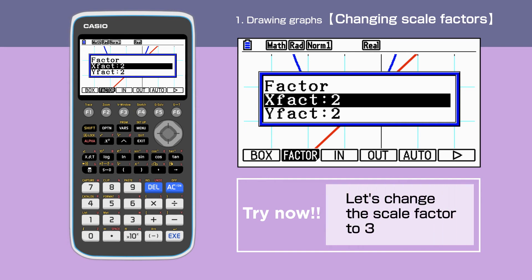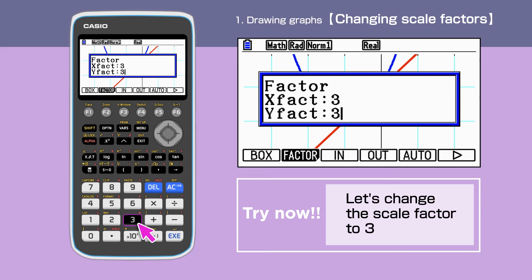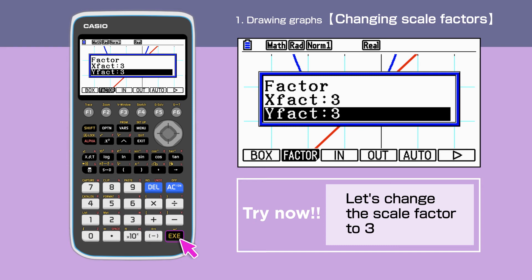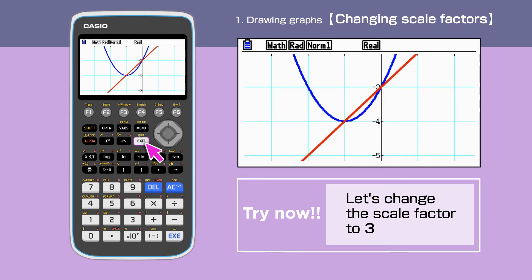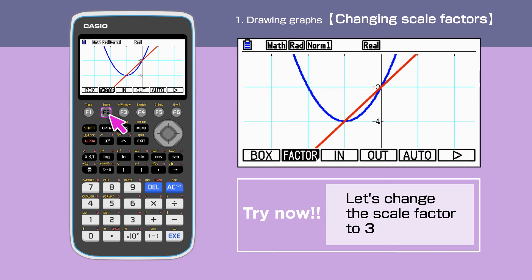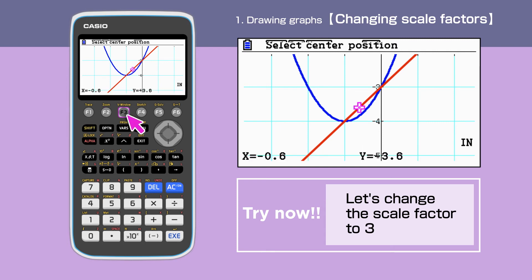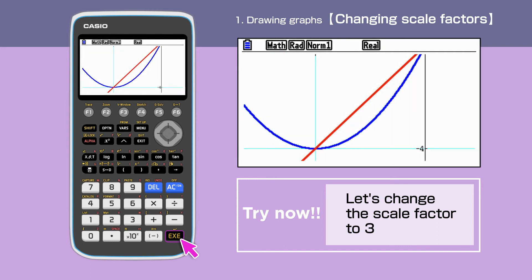Let's set the scale factor to 3. We finish the setting by pressing exit. Once we have finished setting, we need to reflect the changes. We will again need to enter Shift, F2, F3, and execute to zoom in order to obtain our new enlarged graphs.